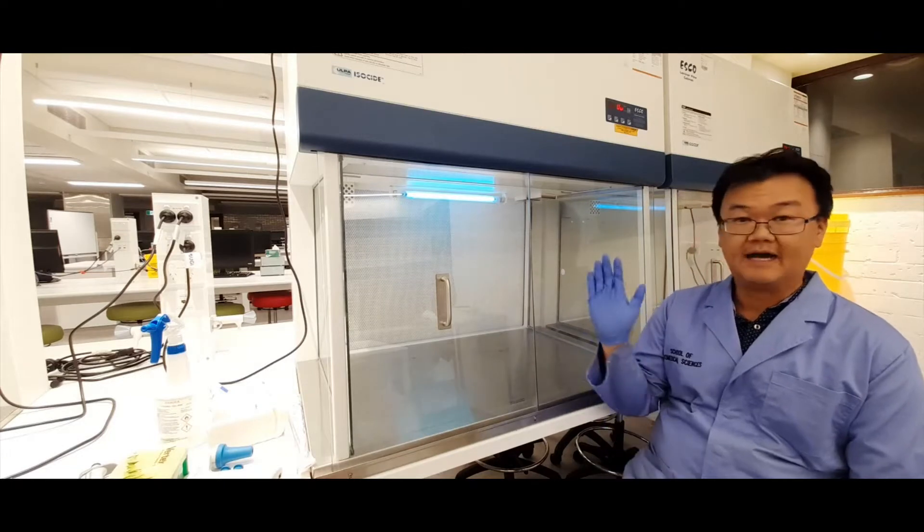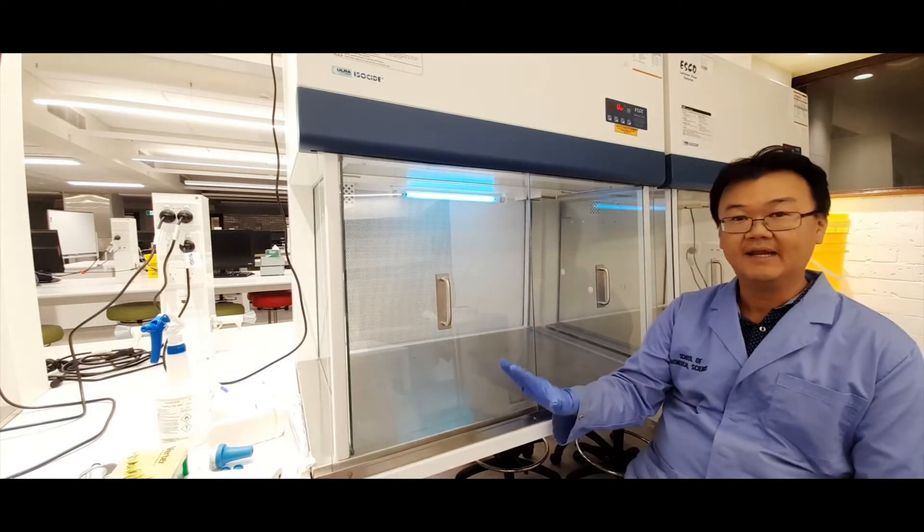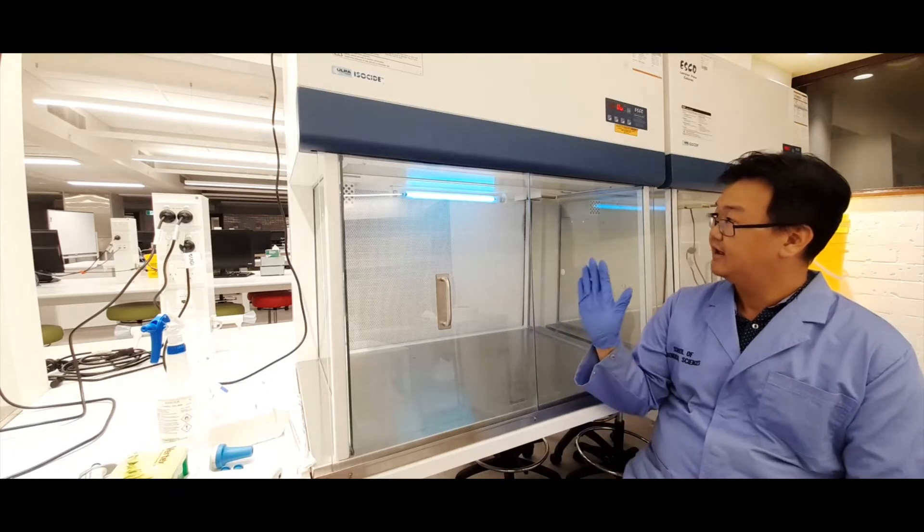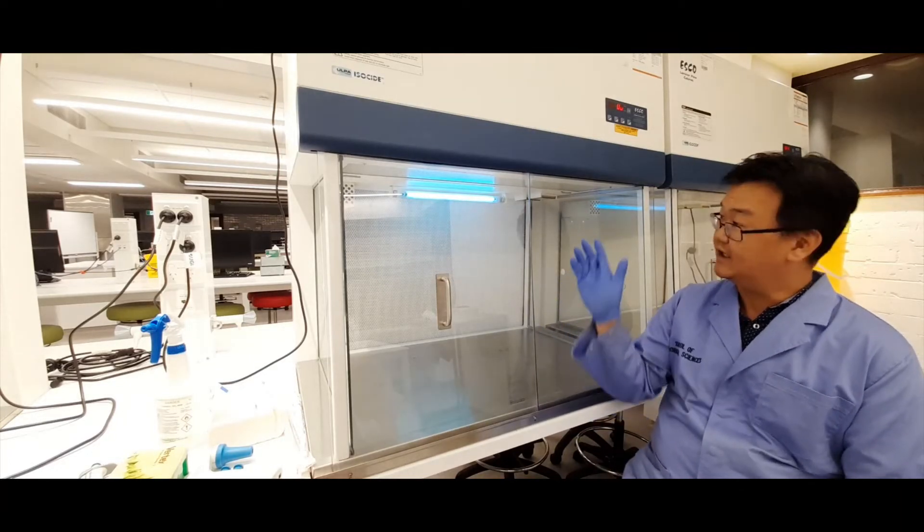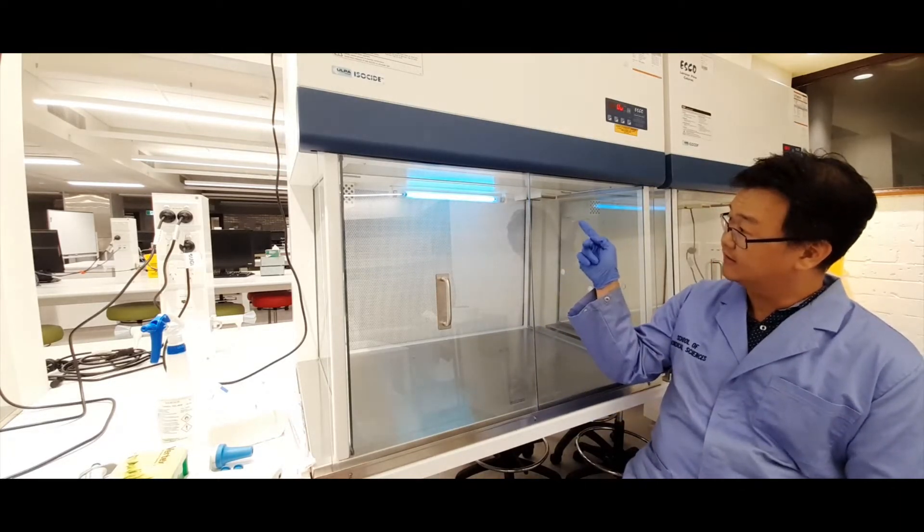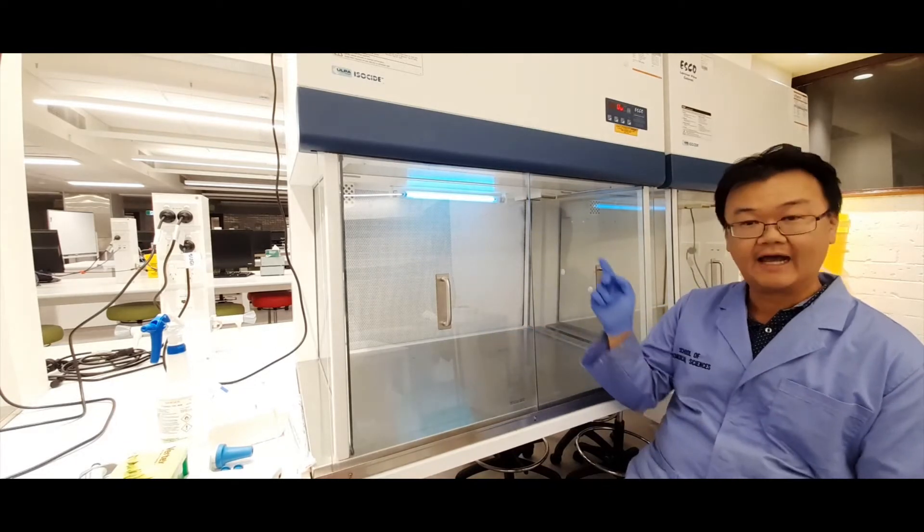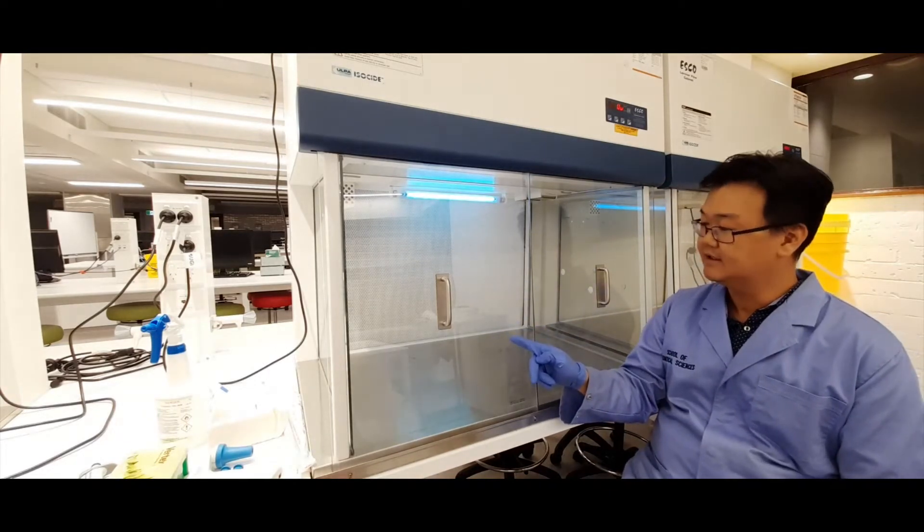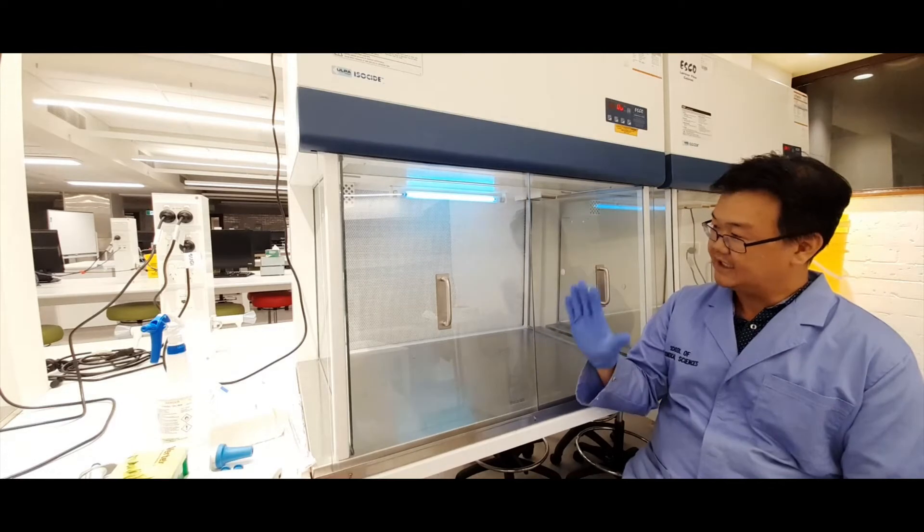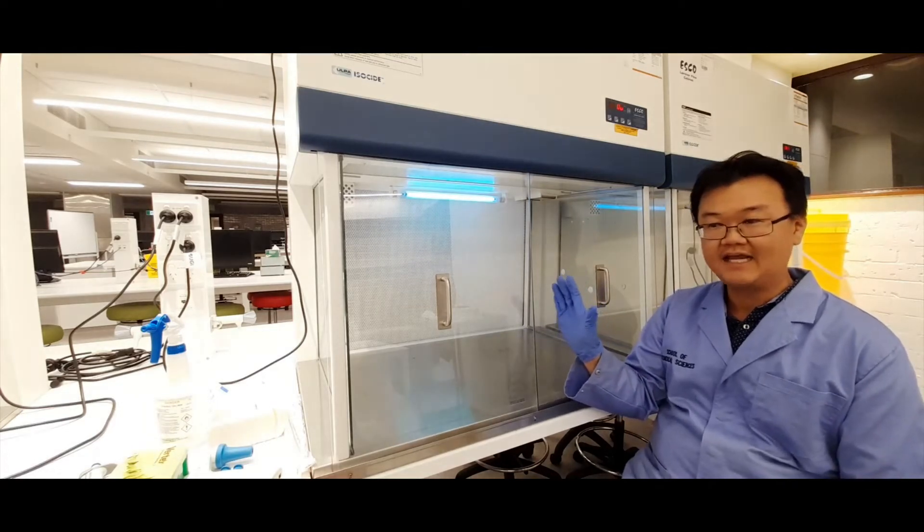These biosafety cabinets are a sterile working environment inside because they're irradiated with UV light. You can see the blue light on currently. It's basically sterilizing the inside of this chamber, and you need to work inside one of these biosafety cabinets when you do your cell culture.